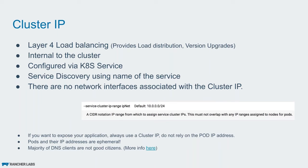Here is an example of the two types of load balancers in AWS. You have the application load balancer, which is layer 7, shown on the left-hand side. And then you have the network load balancer, which is layer 4.